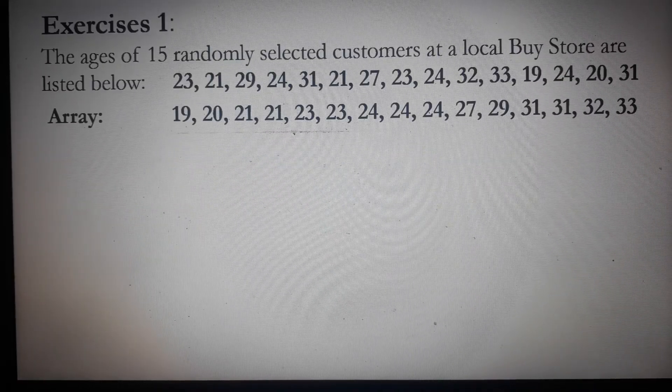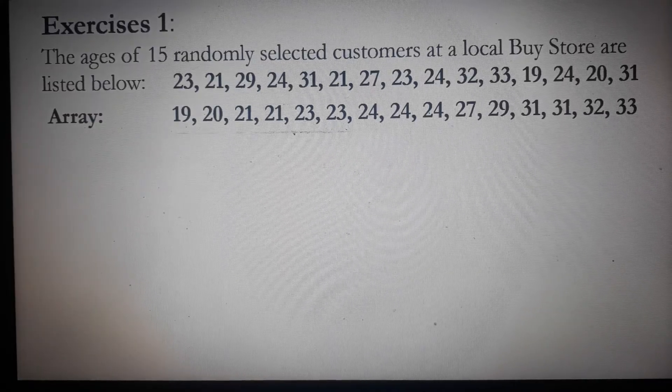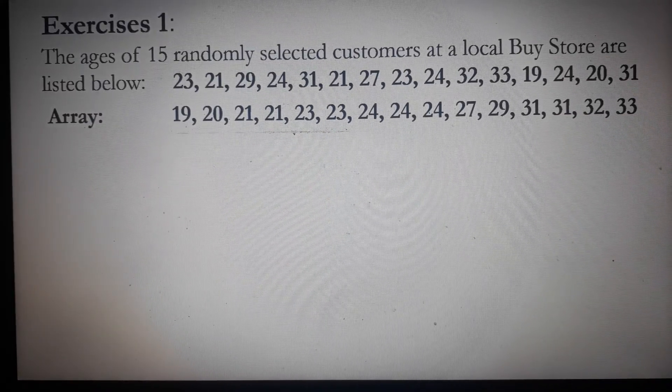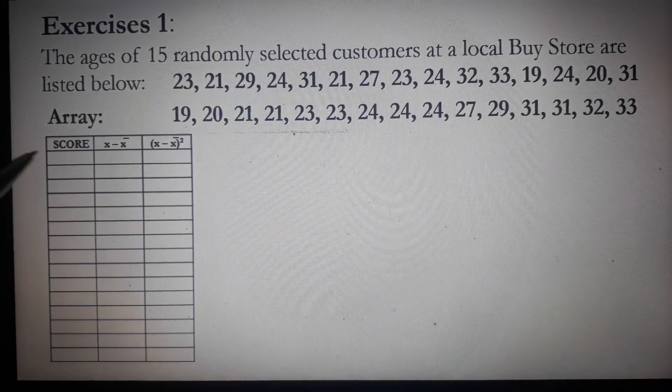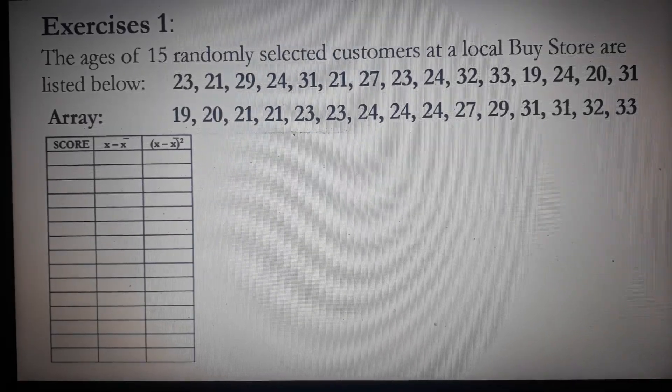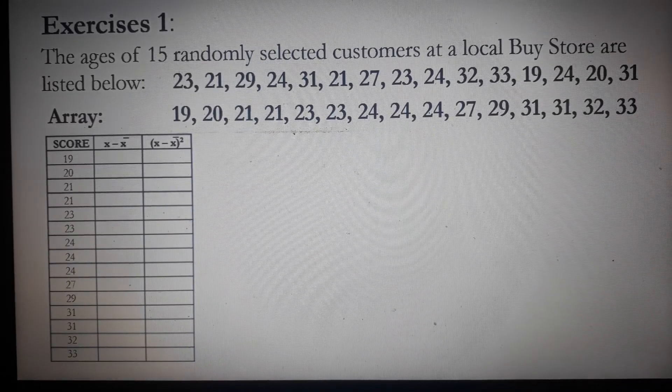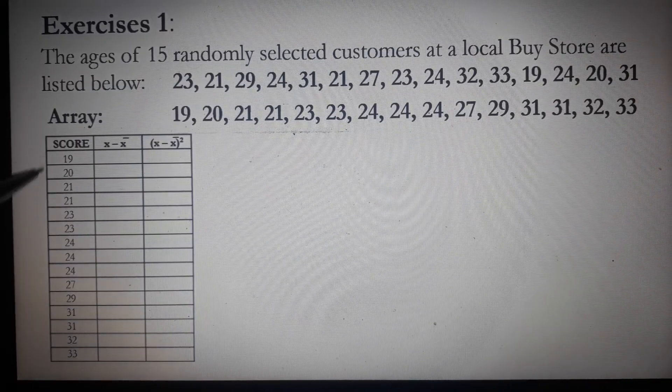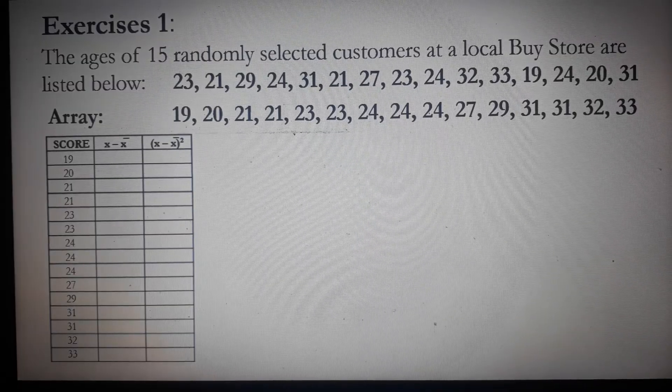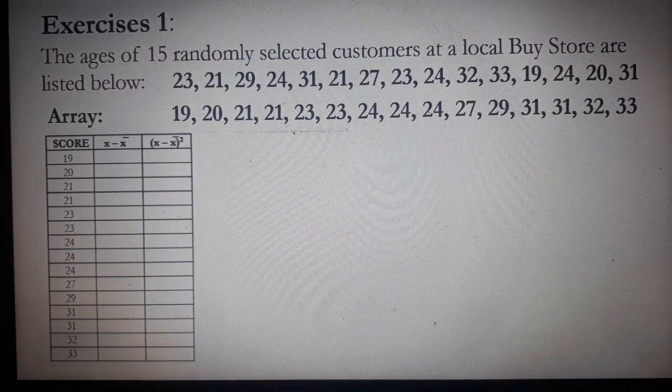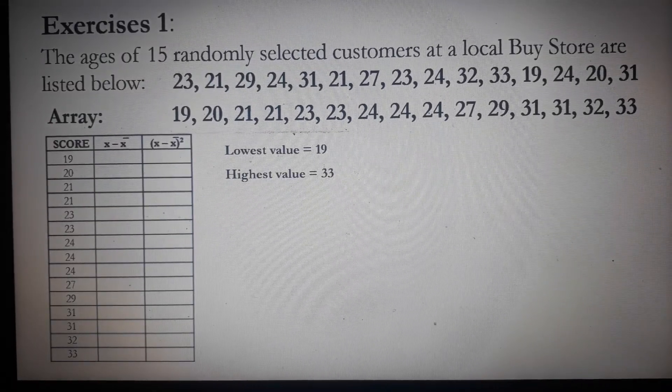Let's consider our first exercise. This time, we will place our data on this table. The first column is labeled as score, so I will simply place the ages—19 all the way down to 33. The lowest value is 19 and the highest value is 33.